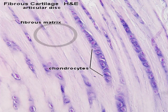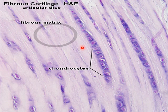Sites of white fibrocartilage include joints with very limited or no movement: mandibular joint, sternoclavicular joint, intervertebral disc, symphysis pubis, shoulder and hip joints, and the semilunar cartilage (medial and lateral meniscus) of the knee joint. The chondrocytes are present in rows, separated by bundles of collagen type 1.